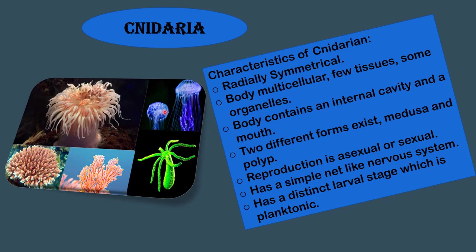Cnidarians may exist in either of two forms: one that is attached to the ocean floor and one that is free-floating. The attached form has a vase-like shape with the upper edges surrounded by long, slender filament-like projections known as tentacles — as seen in Hydra. The free-living form has an inverted bowl-like shape with the lower edges bearing tentacles, as seen in jellyfish. Tentacles aid in movement and in catching prey.